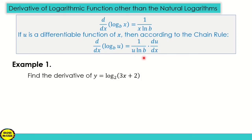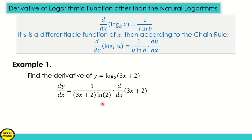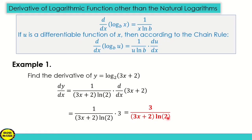Following this formula, number 1: find the derivative of y is equal to log base 2 of the quantity (3x plus 2). Our u is 3x plus 2 and our base b is 2. So that is 1 over (3x plus 2) times ln 2, times the derivative of (3x plus 2), which is 3. The final answer is 3 over (3x plus 2) times ln 2. Some teachers may distribute the ln 2 to get 3x ln 2 plus 2 ln 2 in the denominator — that is also acceptable.